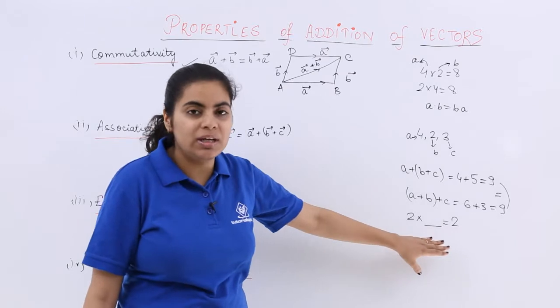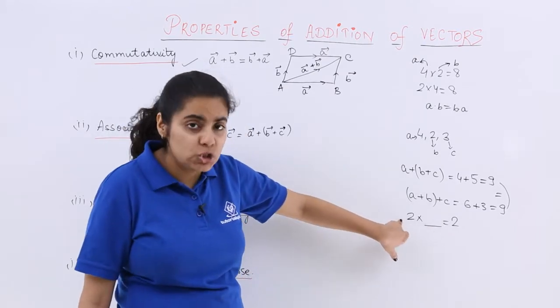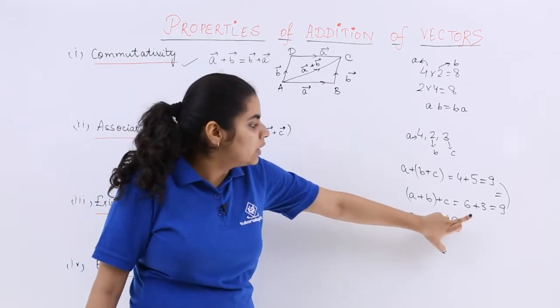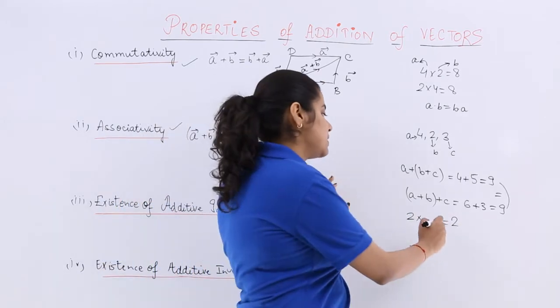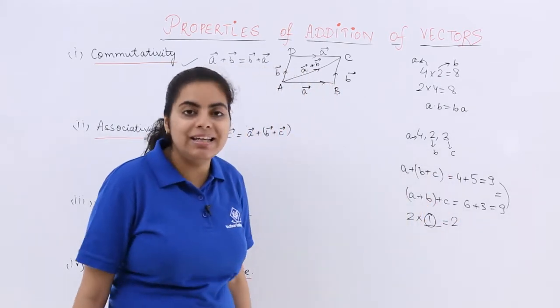What is its multiplicative identity? Multiplicative identity or identity element will be what number should be multiplied in order to give me back this number. So 2 times 1 is 2. So 1 is your identity element.